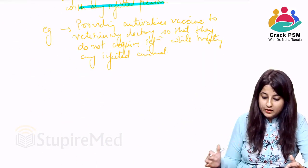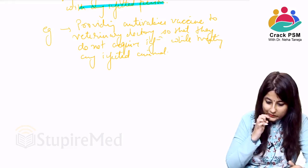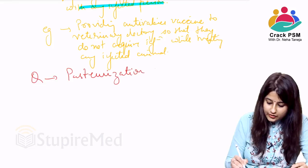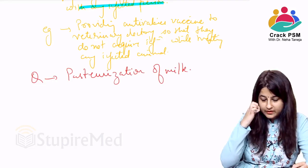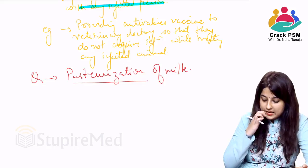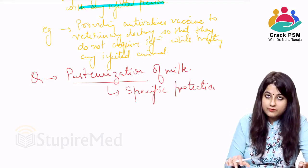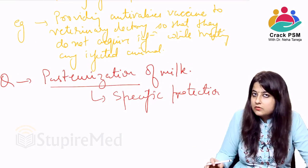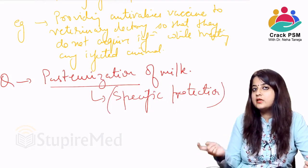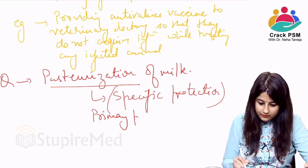Let's understand this topic with MCQ examples. Pasteurization of milk — is it primary, secondary, tertiary, or primordial prevention? Pasteurization is a process to destroy microorganisms in milk, so it is a means of specific protection. Specific protection is a mode of intervention under primary prevention. So pasteurization of milk is an example of primary prevention.